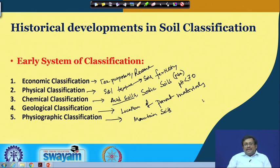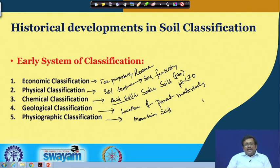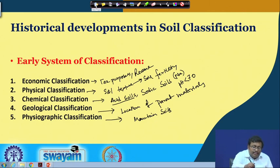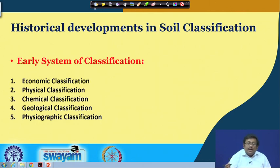The problem with single-criteria classification is it is not holistic. Based on chemical characteristics alone, you cannot classify all the soils of the world. Therefore, it was necessary to develop some kind of holistic classification system that could take into account all soil properties. That is why soil scientists started thinking about the most appropriate way to classify soil.